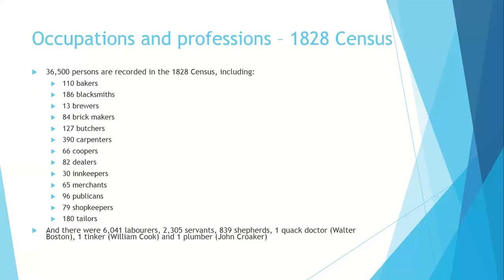What were the occupations of some of those 36,500 people? There were bakers, blacksmiths, brewers, brickmakers, butchers, carpenters, coopers, dealers, innkeepers, merchants, publicans, shopkeepers, almost as many tailors as blacksmiths, over 6,000 labourers, over 2,000 servants, and 800 odd shepherds. One quack doctor, Walter Boston; one tinker, William Cook — which does worry me for the sanitary conditions of the original colony; and one plumber, John Croker, who must have been a very busy person.